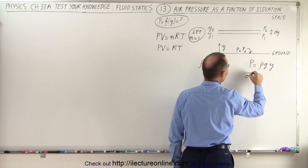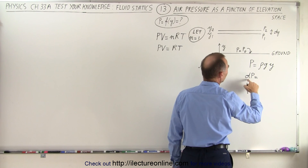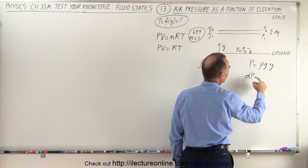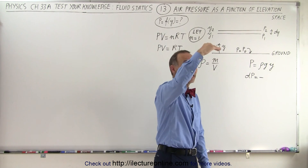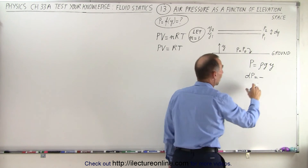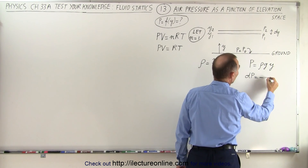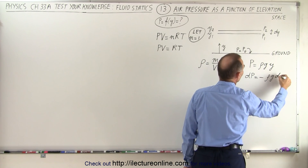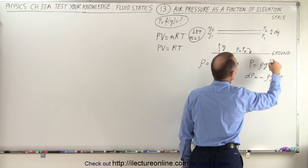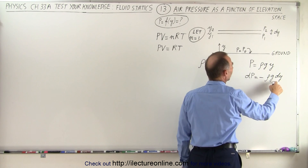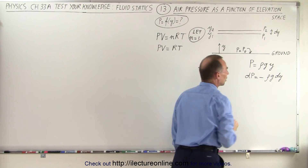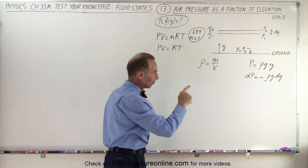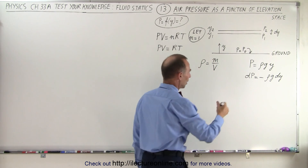We can write that dP equals the change in pressure, which is negative — because as y becomes greater, pressure becomes lower — so dP equals negative rho times g times dy. Over a small distance dy in the atmosphere, we have a small change in pressure described by this equation.